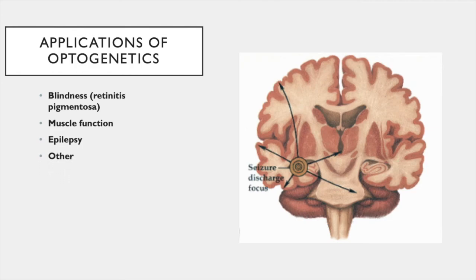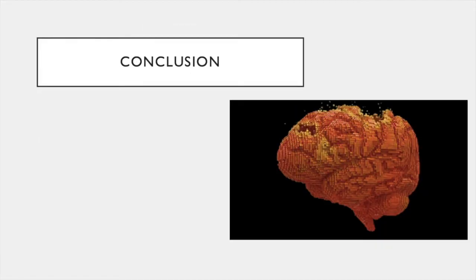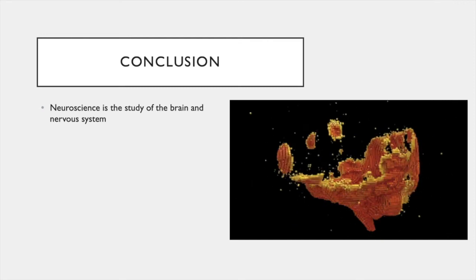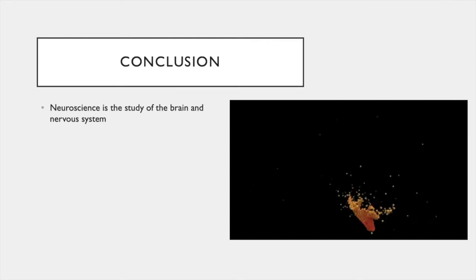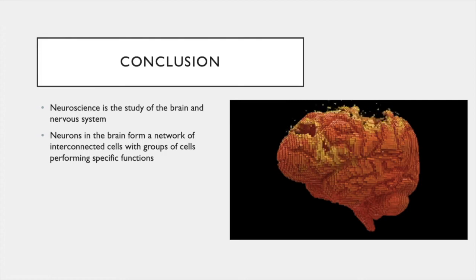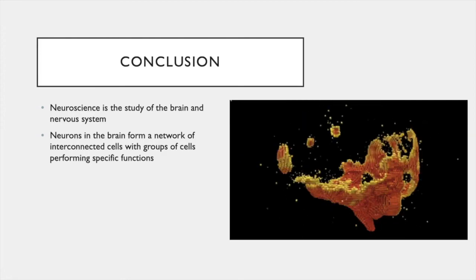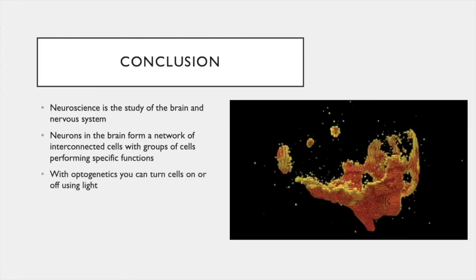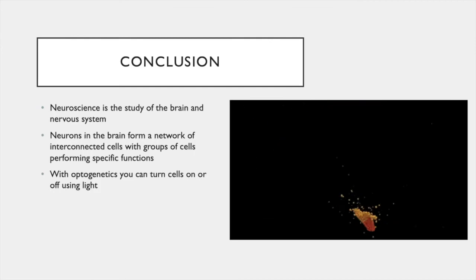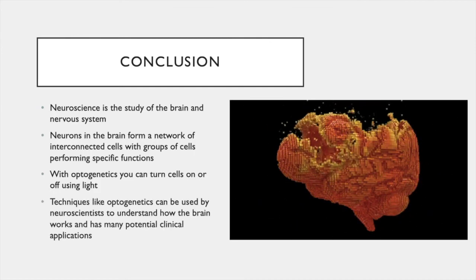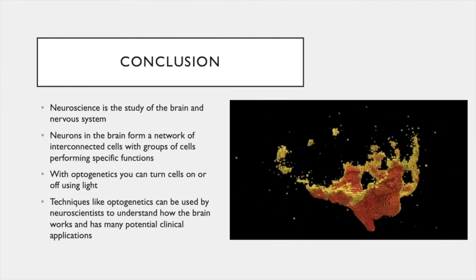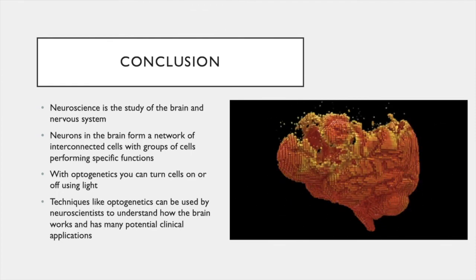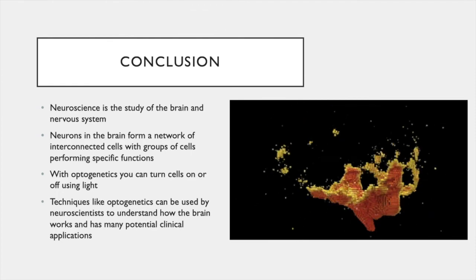There are many other potential clinical applications of optogenetics, and links with more information will be included in the description. In conclusion, neuroscience is the study of the brain and nervous system. Neurons in the brain form a network of interconnected cells with groups of cells performing specific functions. With optogenetics, you can turn cells on and off using light. Techniques like optogenetics can be used by neuroscientists to understand how the brain works, and the technique has many potential clinical applications.